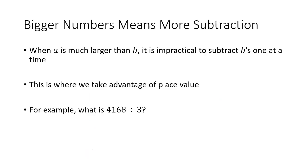Now when the numbers are bigger, it's impractical to subtract the divisors one at a time, but that's where we can take advantage of place value. So if we have 4,168 divided by 3, we can think of subtracting a whole bunch of 3s all at once. We might notice that we could subtract 3,000 from 4,168 and get 1,168 — that's 1,000 threes that we subtracted, so our quotient is at least 1,000.